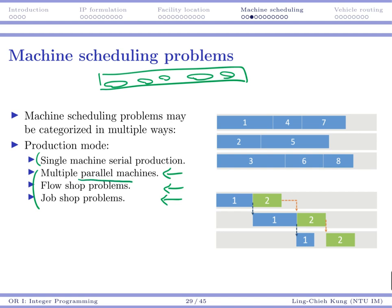The first situation is parallel machines. In this example, you have eight jobs and you need to assign them to three machines. For example, machine one takes jobs one, four, and seven, and so on. Once a job enters a machine and is processed for a certain amount of time, it leaves the system and it's done — each job has only one stage.